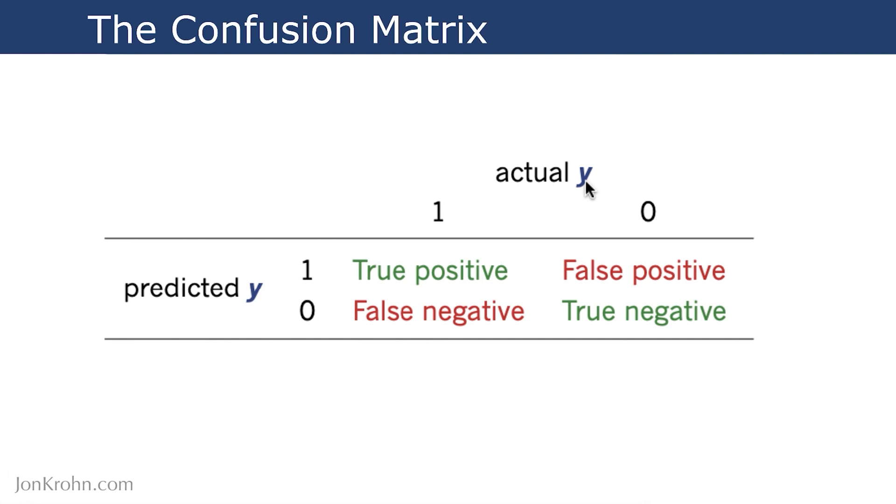If there really is a hot dog, and the algorithm predicts that there is a hot dog, then this is a true positive. It's a correct classification. The matrix is not confused.